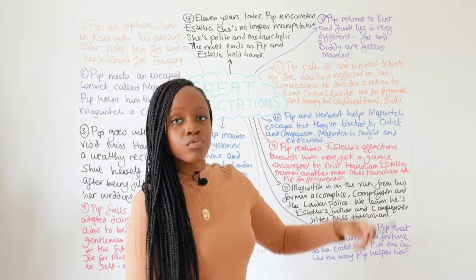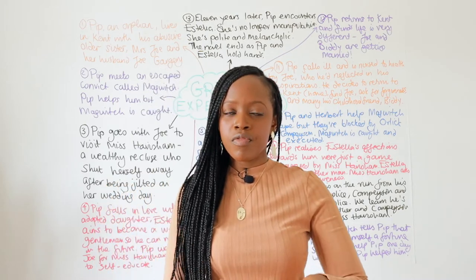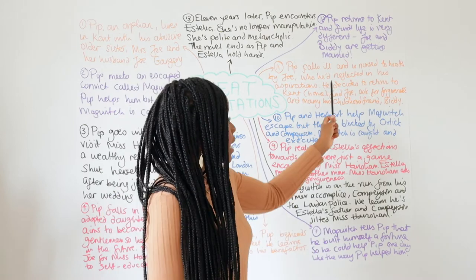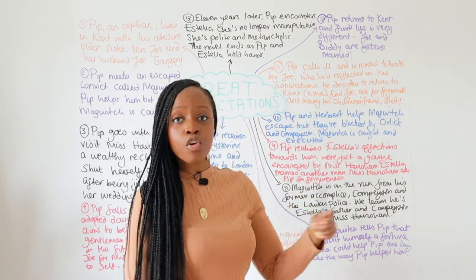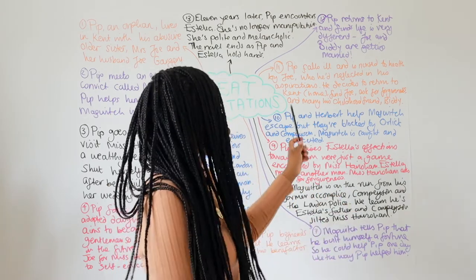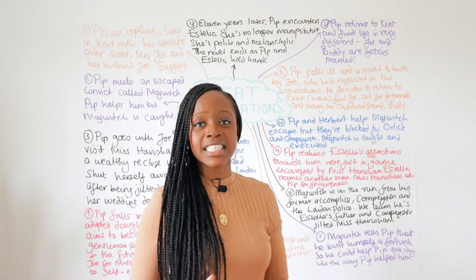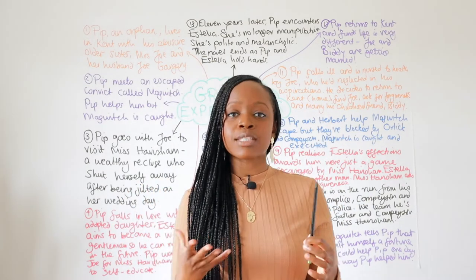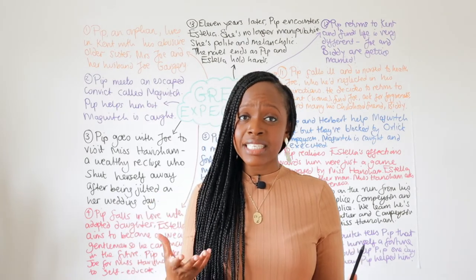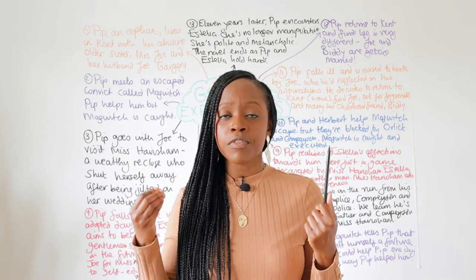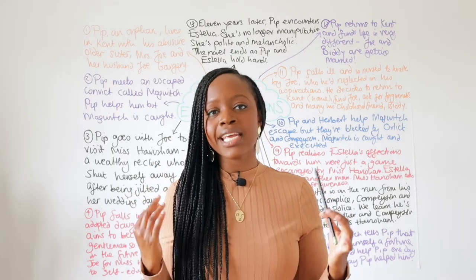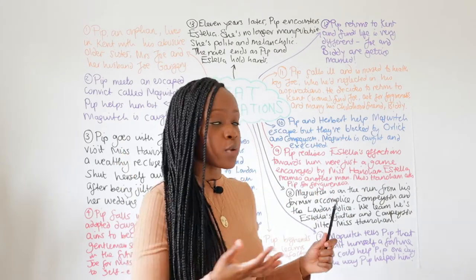Pip falls really, really ill — all of these revelations and terrible things that have happened cause him to fall ill. He is nursed back to health by Joe Gargery, the husband of his sister. Joe nurses him to health, but we learn that Pip had neglected Joe in his aspirations to build wealth and become an ideal gentleman. Even if Pip had neglected him, Joe still was very loyal to him — a genuine friend and family member — and he's the person that steps in and helps Pip get back to health.